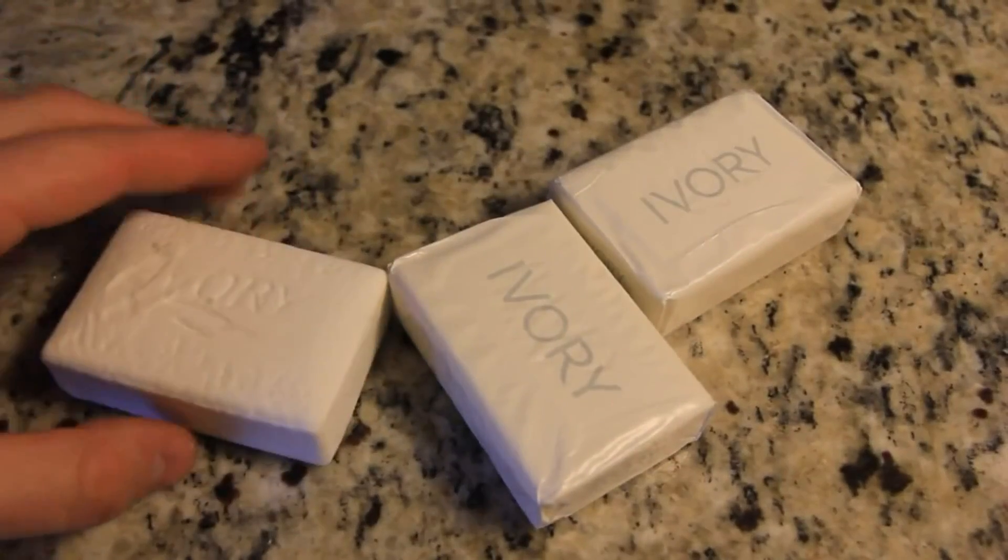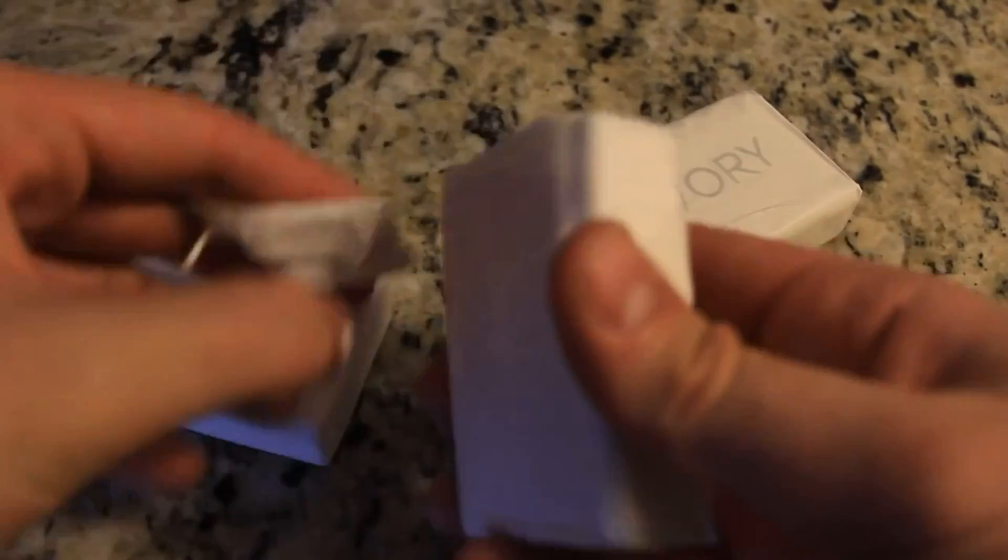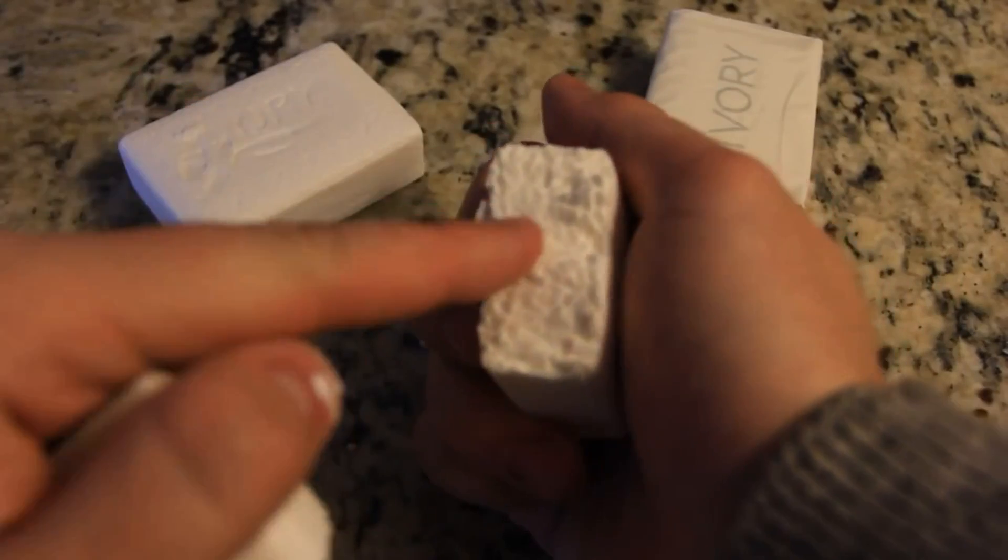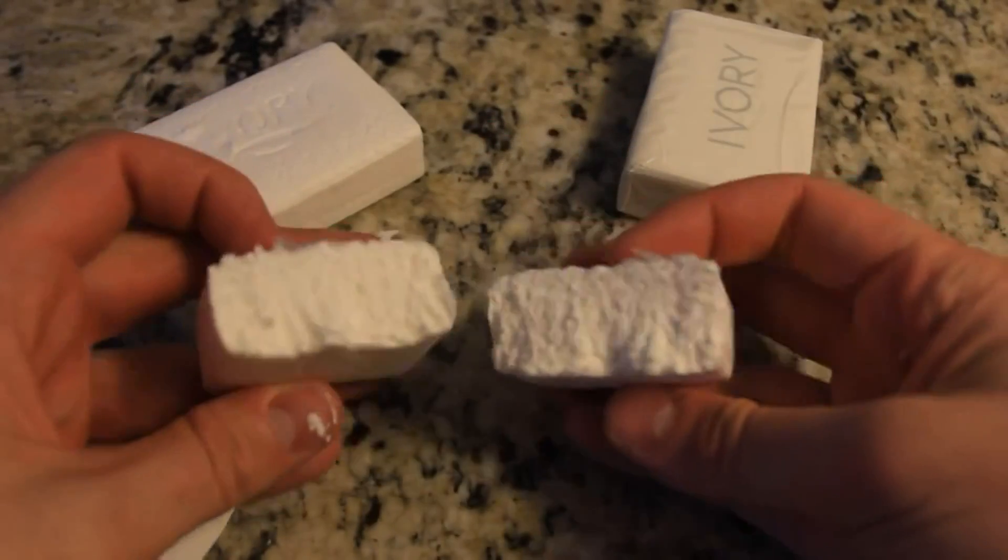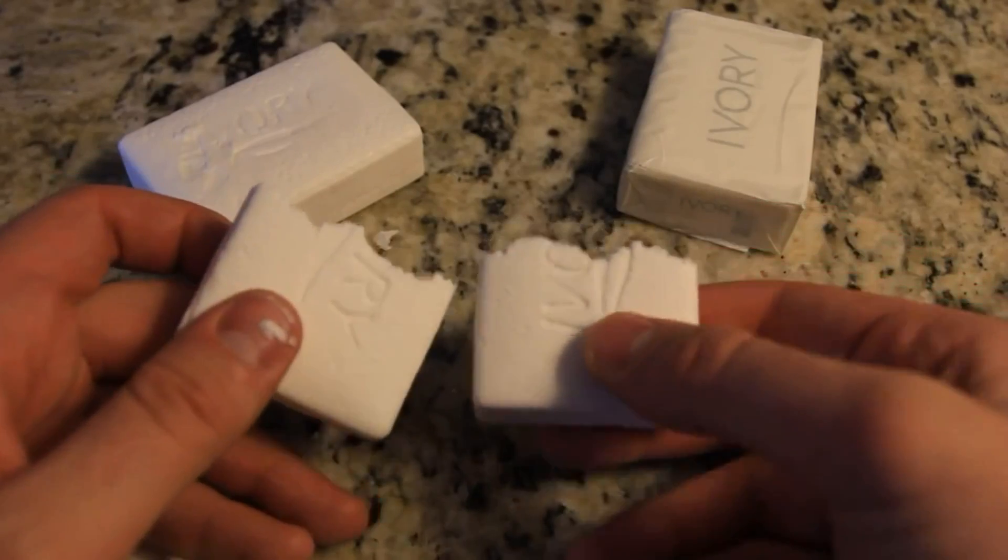So this is what ivory soap looks like. It's only a dollar for three bars of soap. What you're going to find out about this soap, it's really light. Let's break it. You see? It's almost like cream. So let's put it in a microwave and let's see what happens.